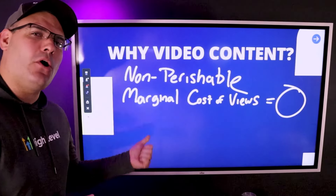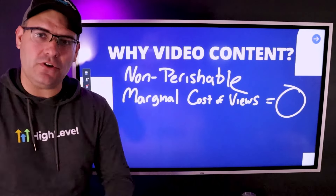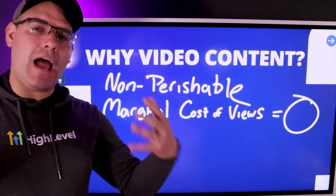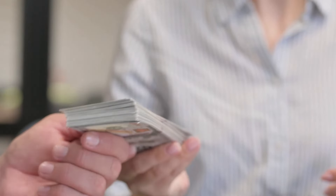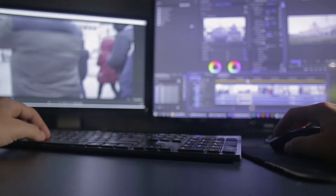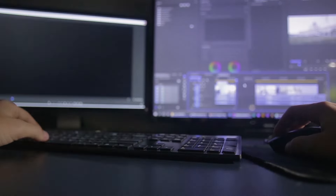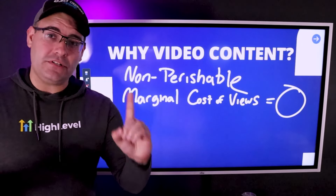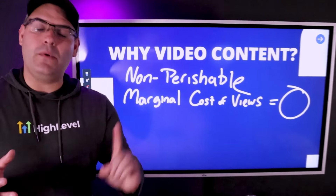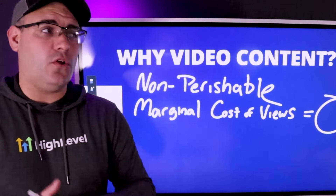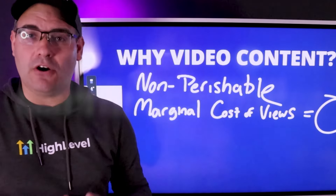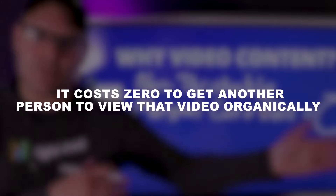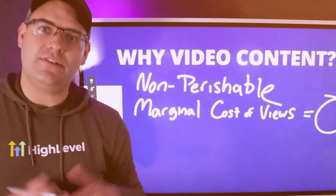The next thing I like about video content is that the marginal cost of getting an extra view is zero. I might put four hours and $500 into making a YouTube video — well produced, well edited, scripted out, with a thumbnail. I might put a lot of time, effort, and money into getting one person to view that video once. But the second, third, fourth, all the way up to the millionth view costs me zero to get organically.